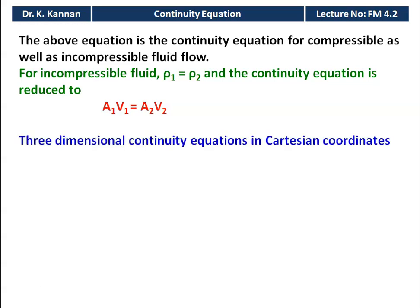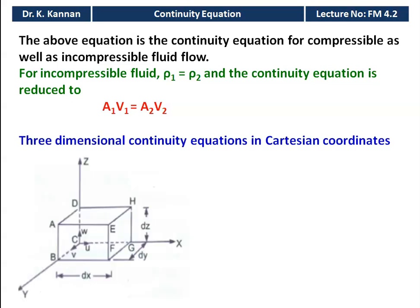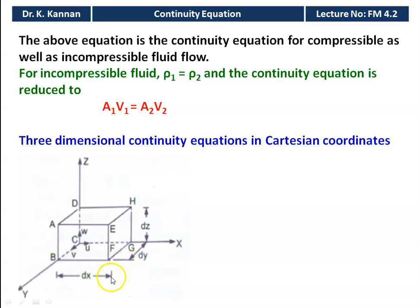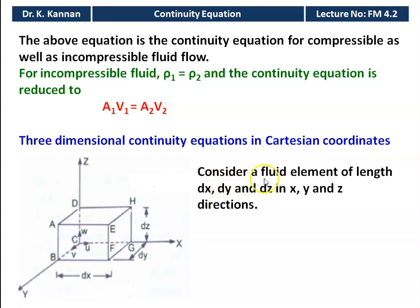For the three-dimensional continuity equation in Cartesian coordinates, we consider a fluid element in three directions: x, y, and z. The fluid element ABCDEFGH has length dx in the x direction, dy in the y direction, and dz in the z direction.